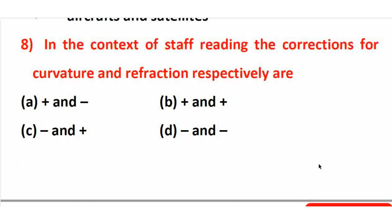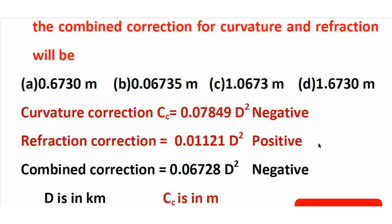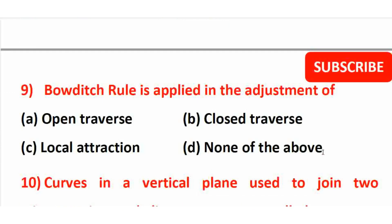In the context of surveying, the correction for curvature is subtractive (negative) and the correction for refraction is additive (positive). So the answer is option C. Bowditch rule, also known as the compass rule, is applied in the adjustment of a closed traverse to distribute the closing error.